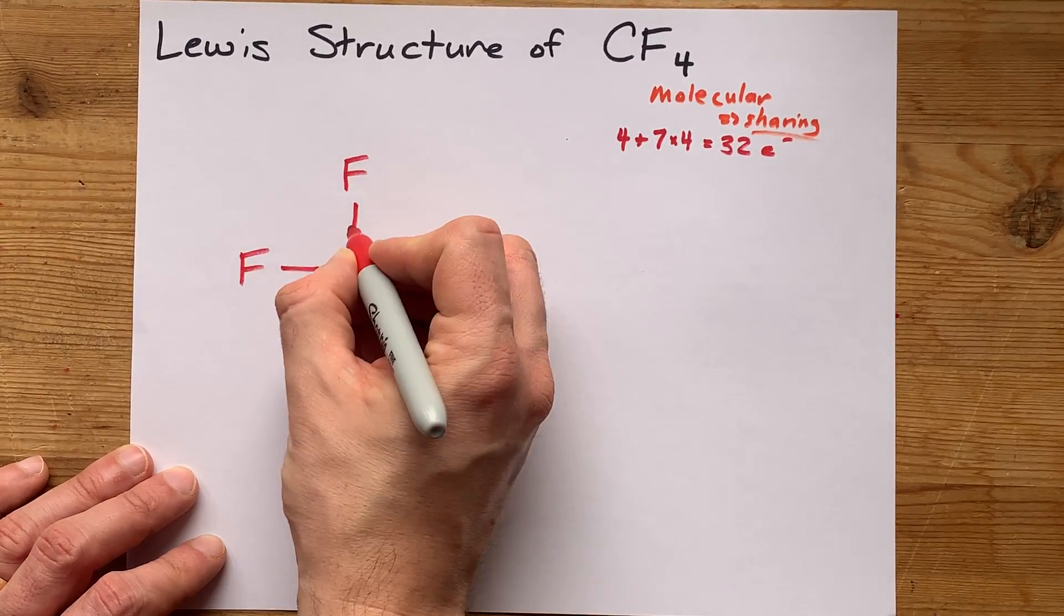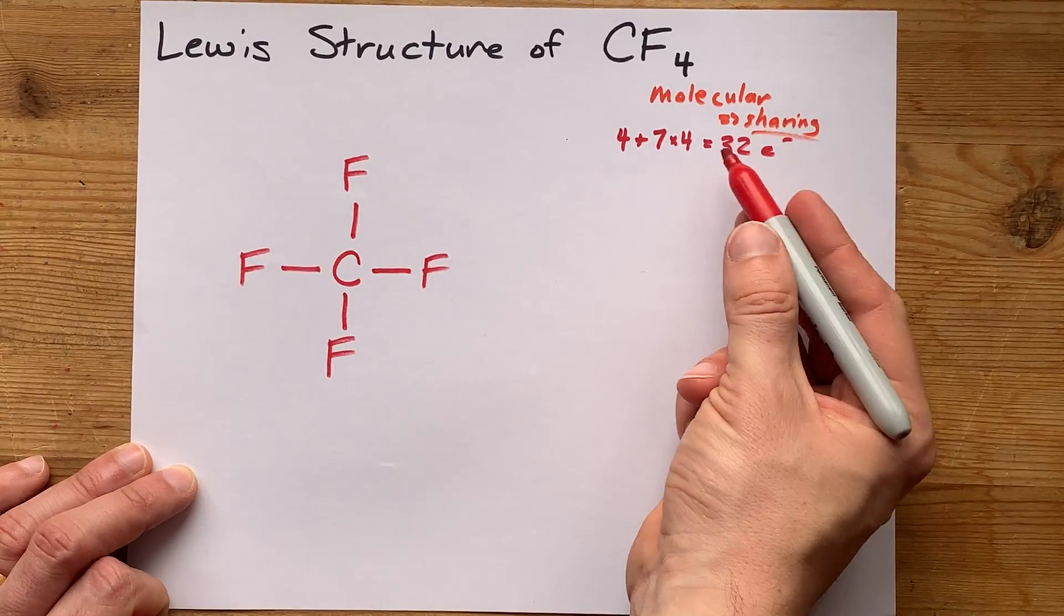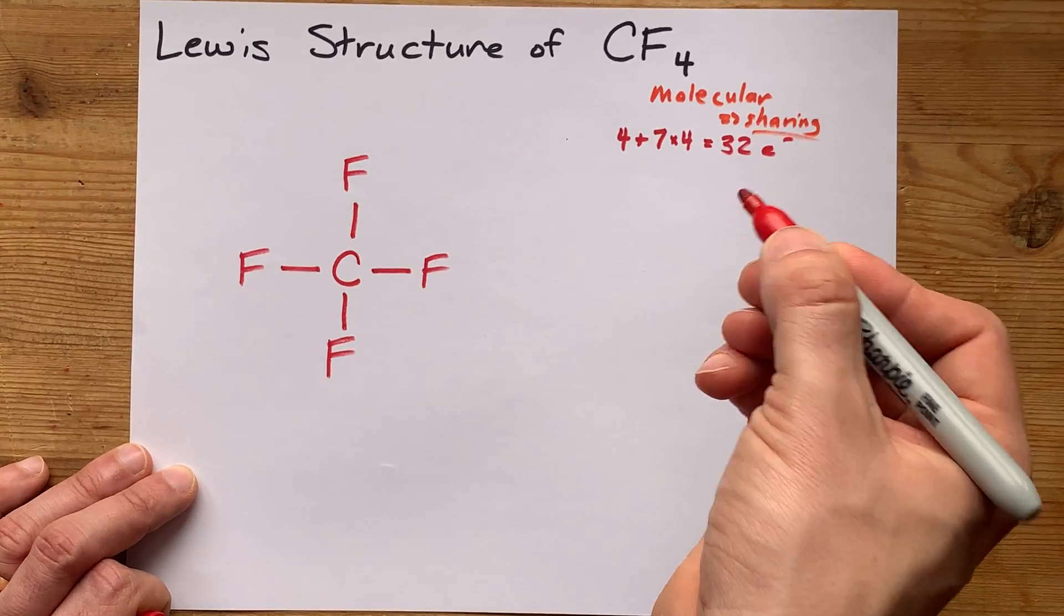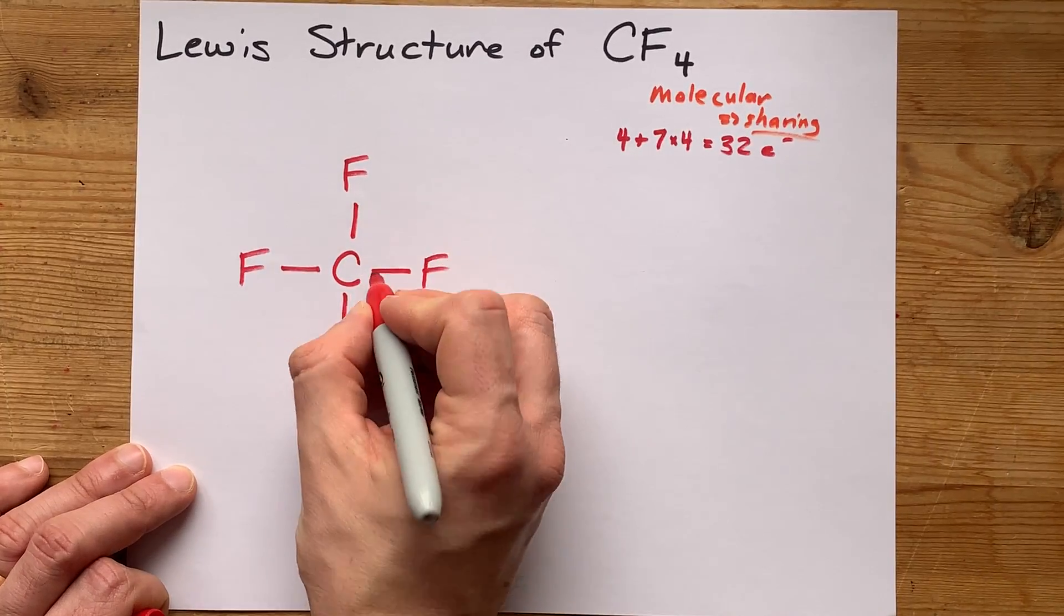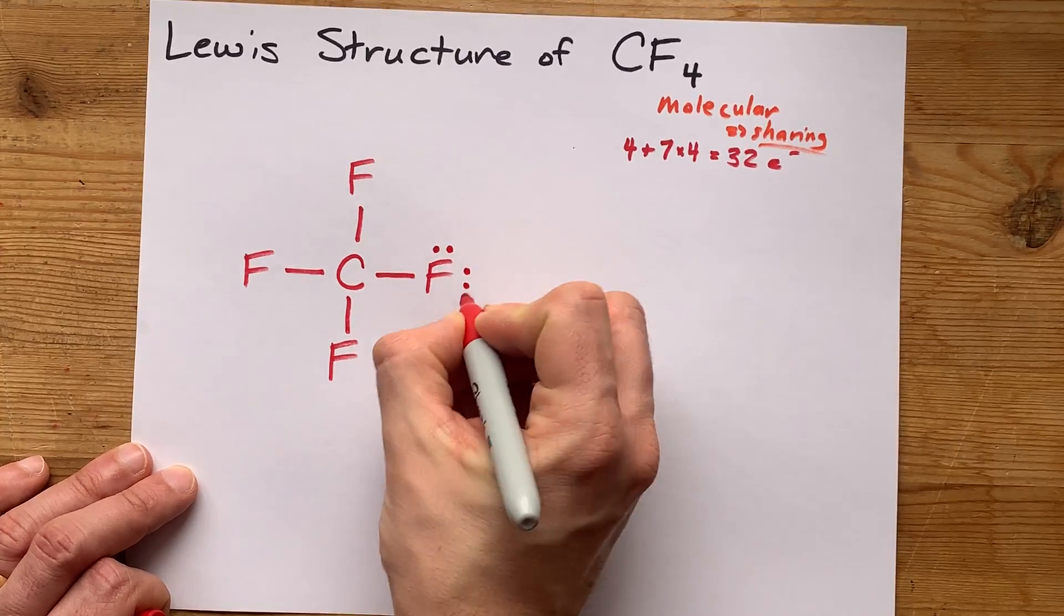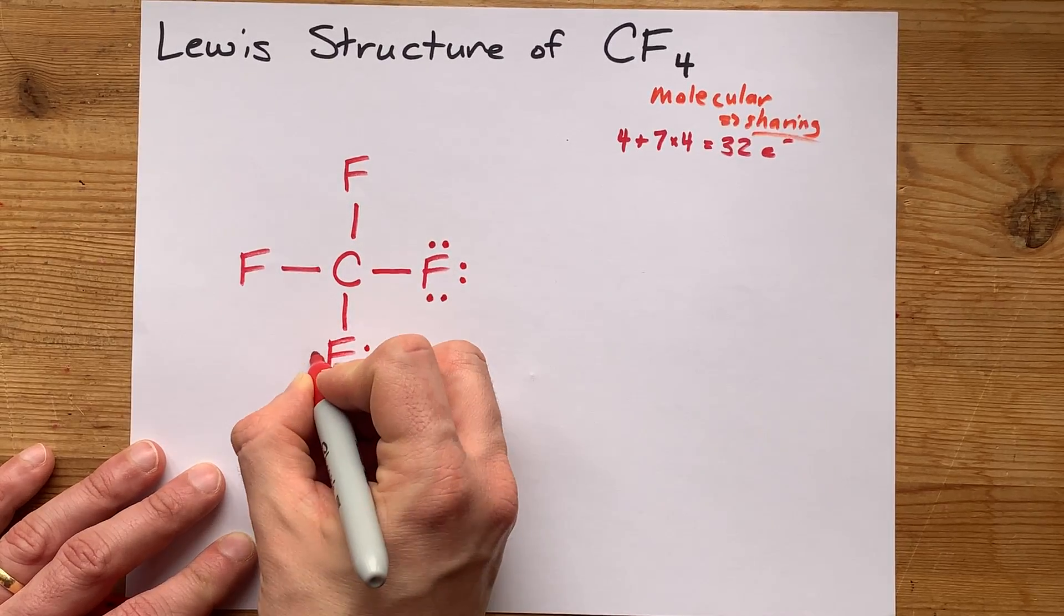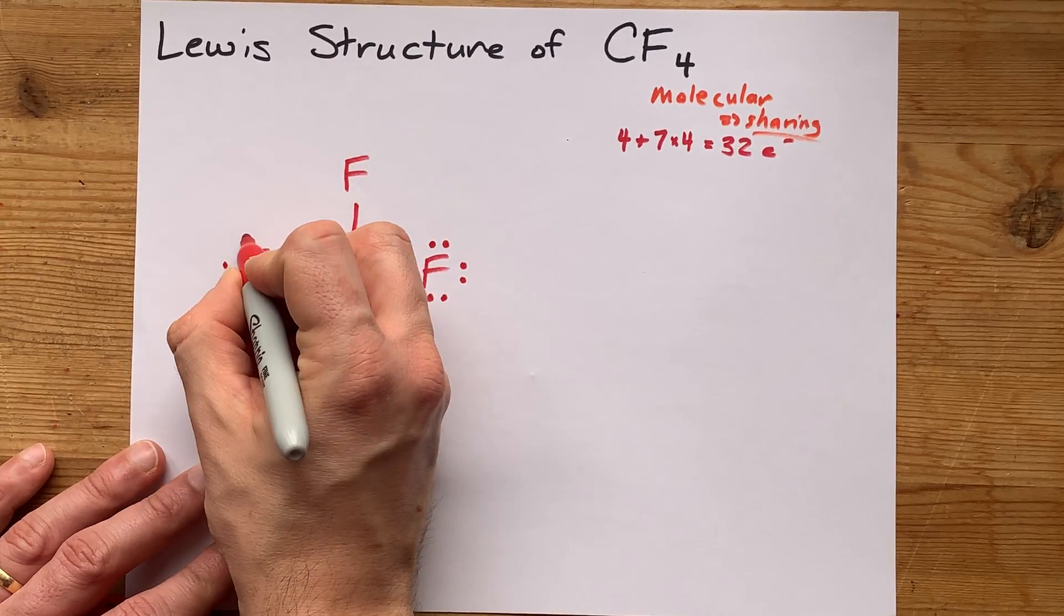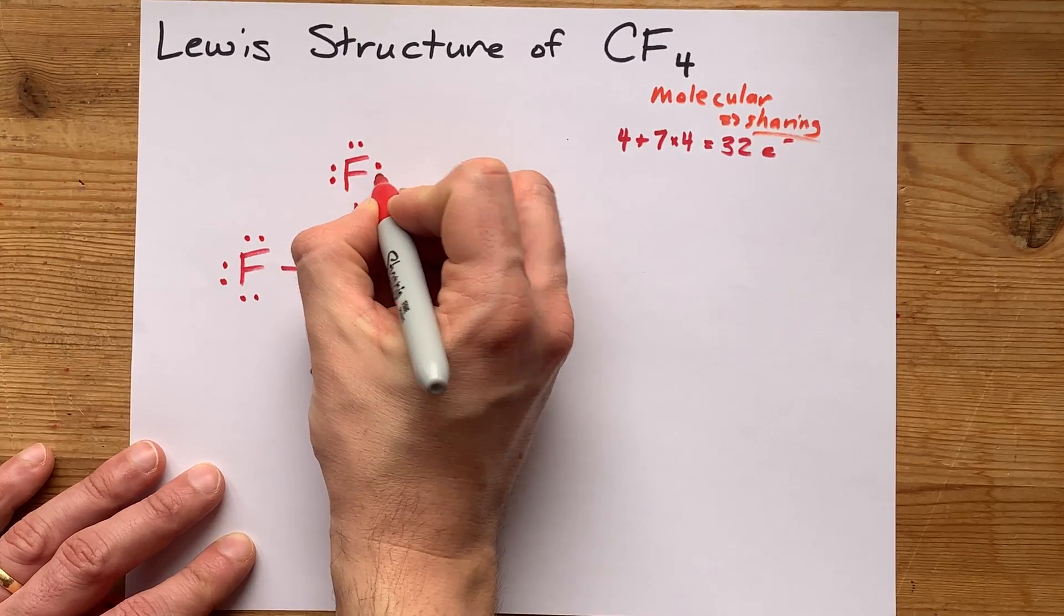That accounts for 2, 4, 6, 8 electrons so far. Now I need 32, so I'm going to fill the octets of the outer atoms until I get to 32 electrons, or I run out of space, or I run out of electrons. Counting from 2, 4, 6, 8, up through 9, 10, 11, 12, continuing to place electrons until reaching 32.